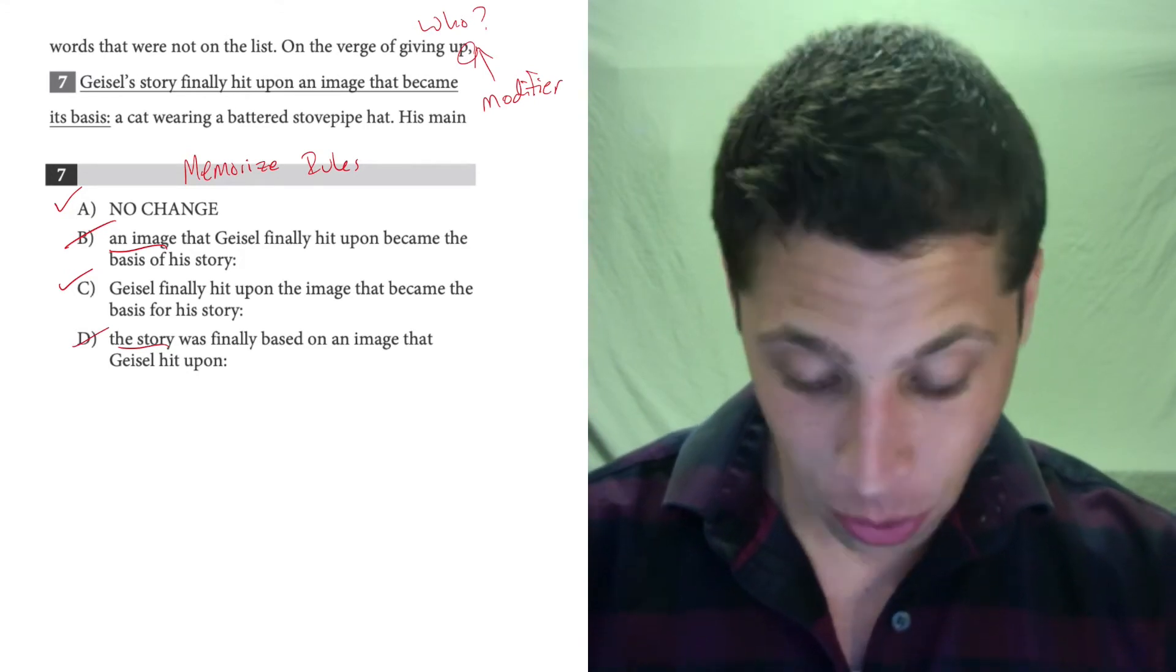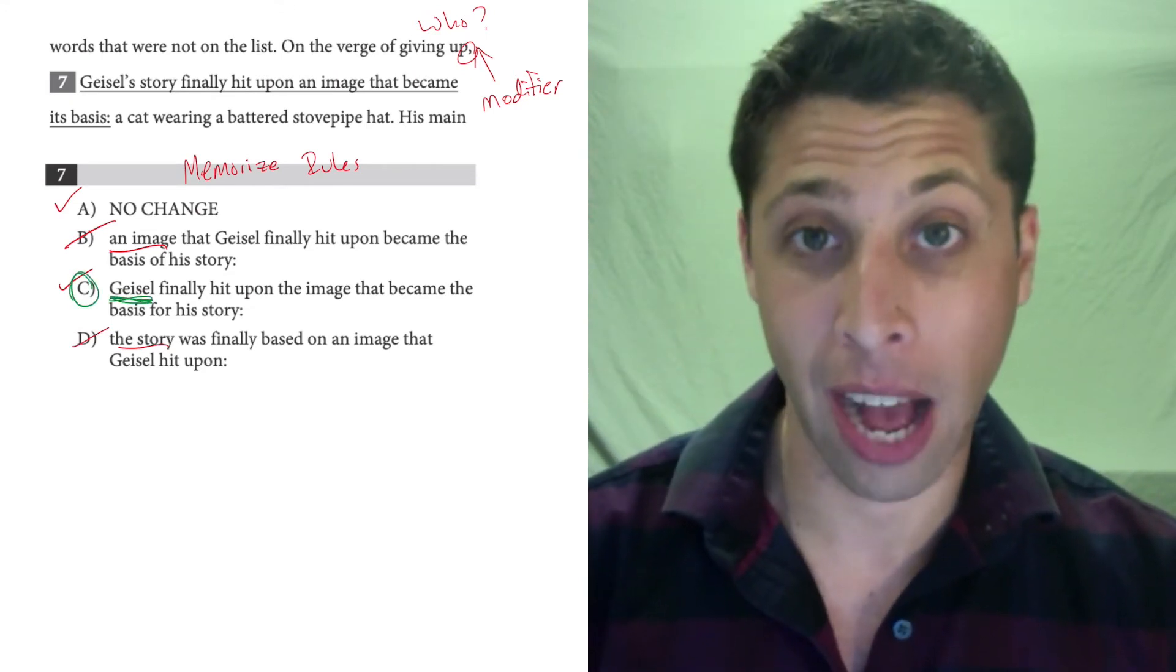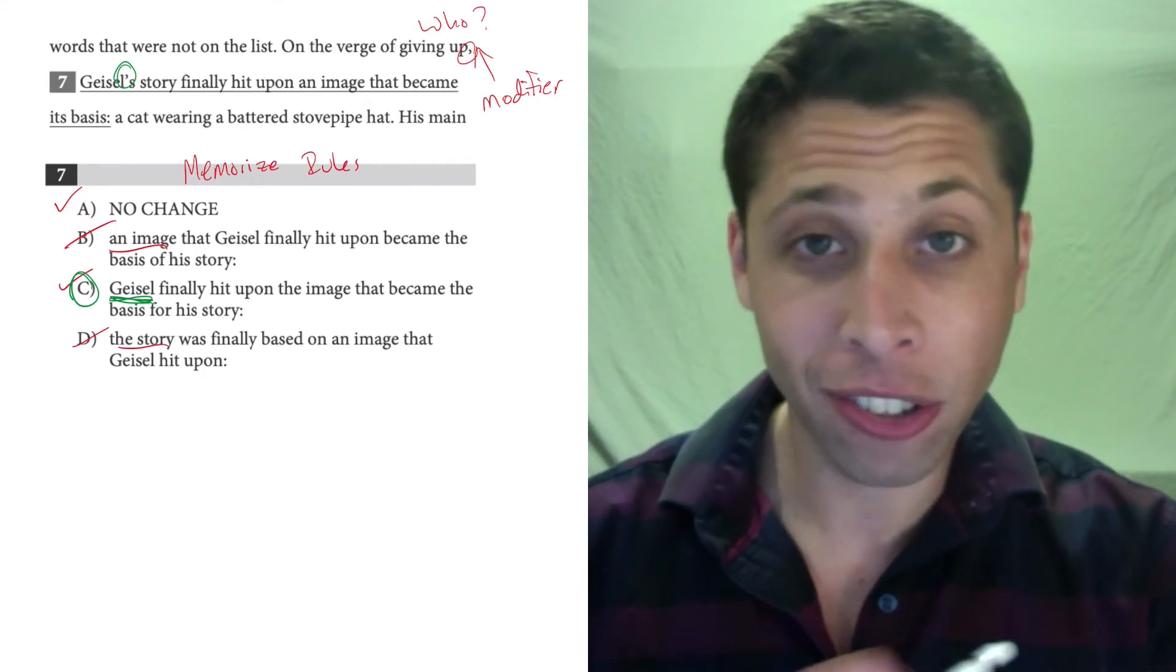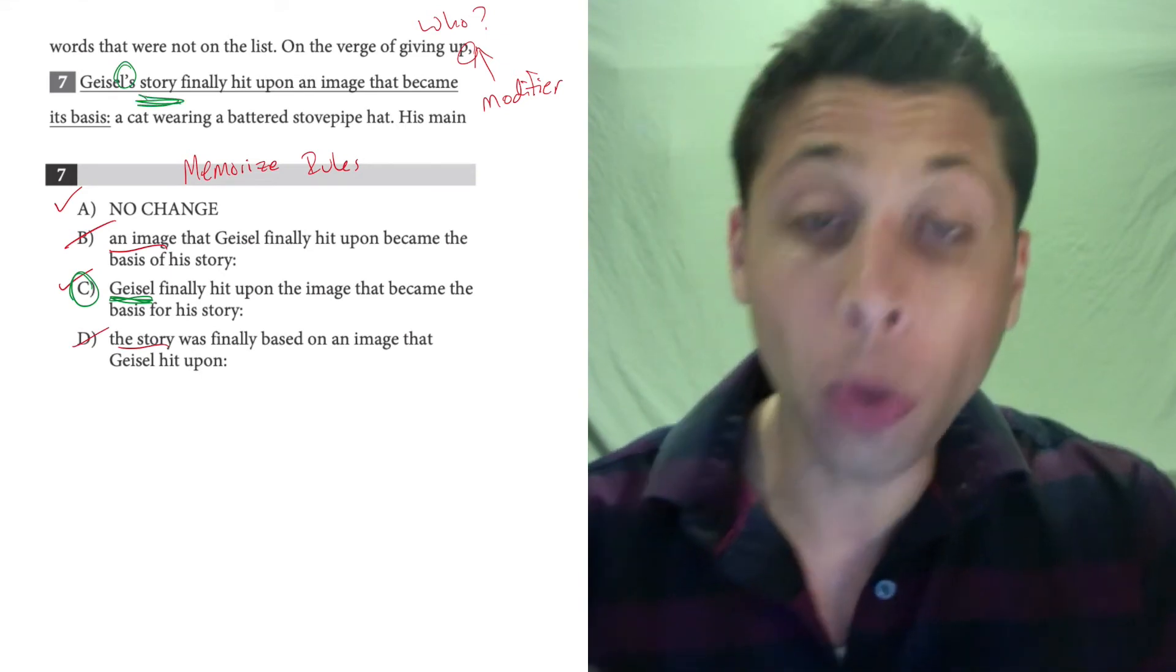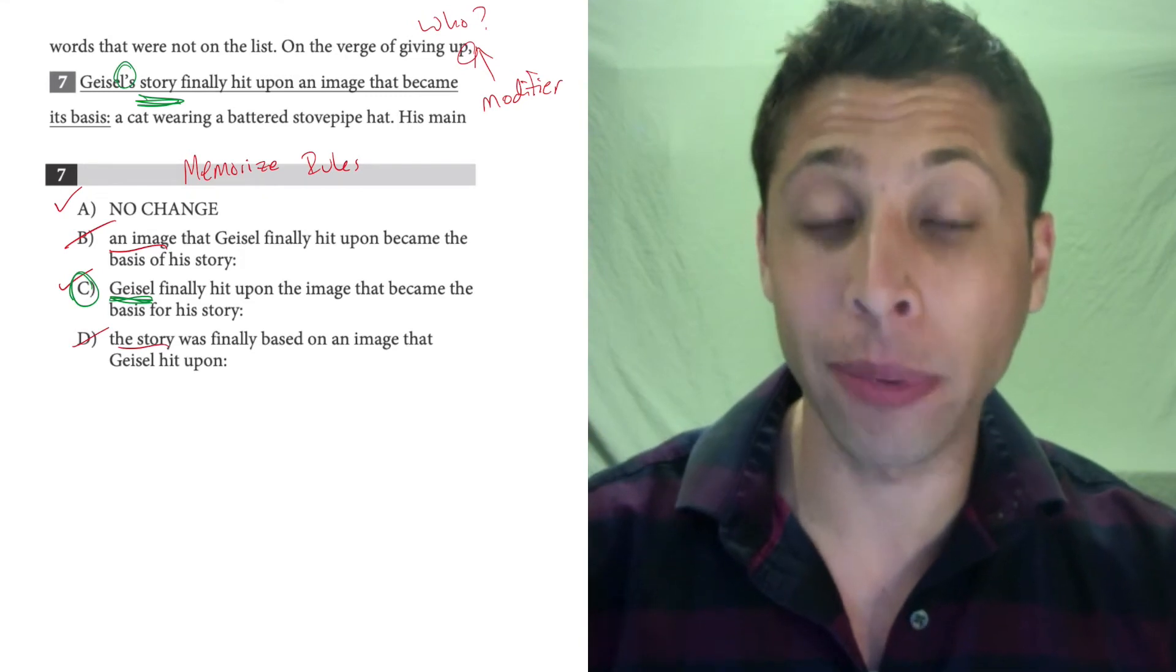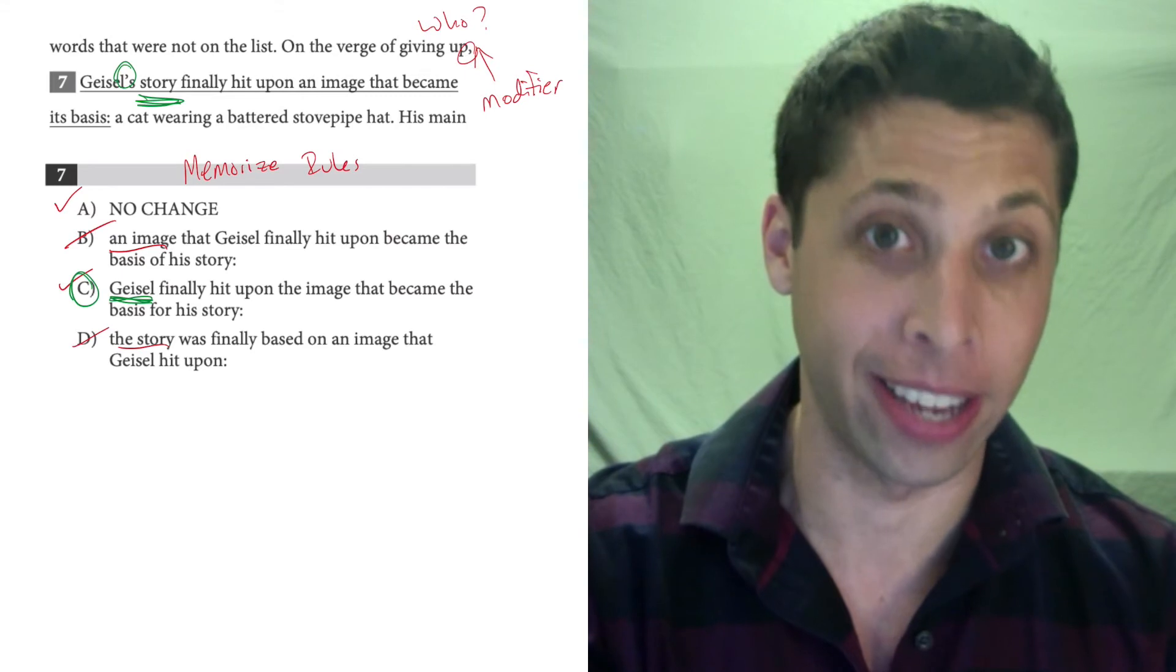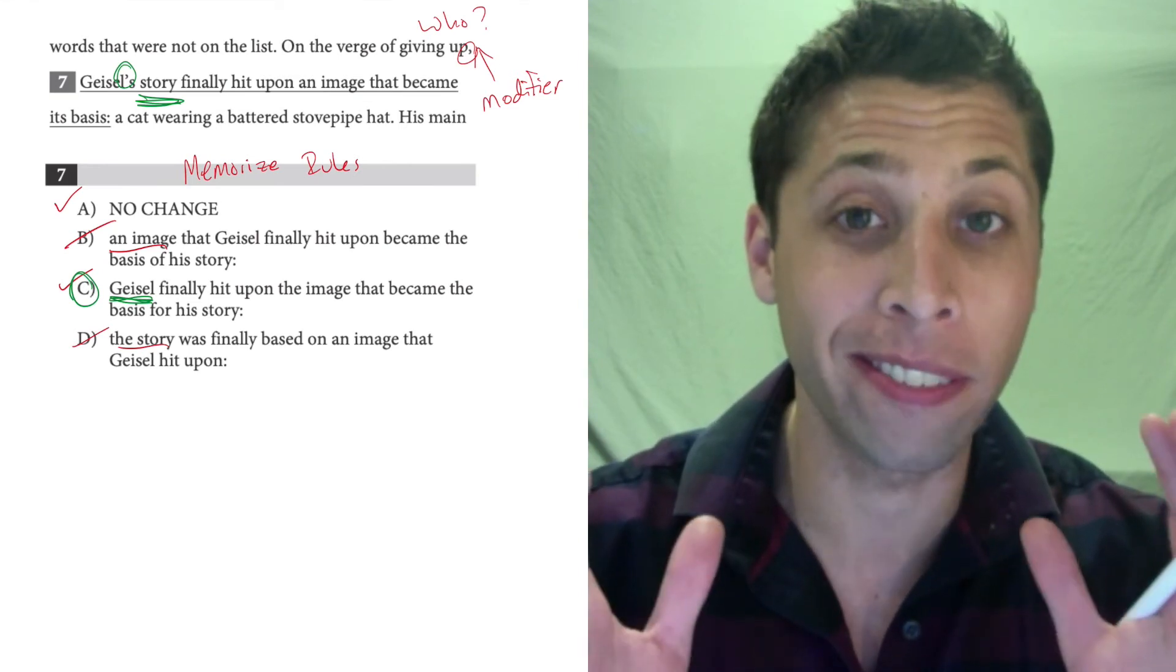Now, choice C is the only one that works here because it is actually following the comma with this person. Choice A looks like it is, but this apostrophe causes a problem. It's not actually Geisel that we're talking about. It's his story that we're talking about. So this is actually the same problem as choice D. It's not following the comma with the right thing. The person is actually kind of like an adjective here that's describing the real topic of the sentence in choice A, which is the story. We want the topic to be Geisel himself because that's what the modifier is talking about.